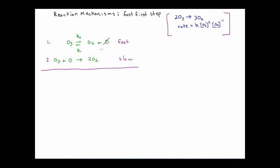We see that this single oxygen atom here counts with this one, so we're going to get two O3s on the left side of the arrow, and over here we're going to have three O2s. So the equation sums together properly. This series of elementary steps has met the first qualification.